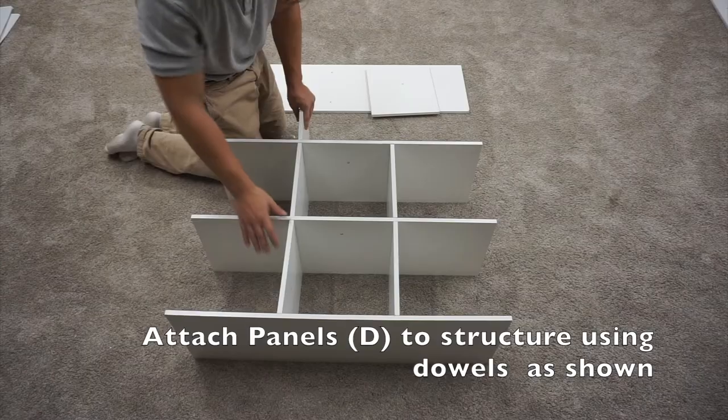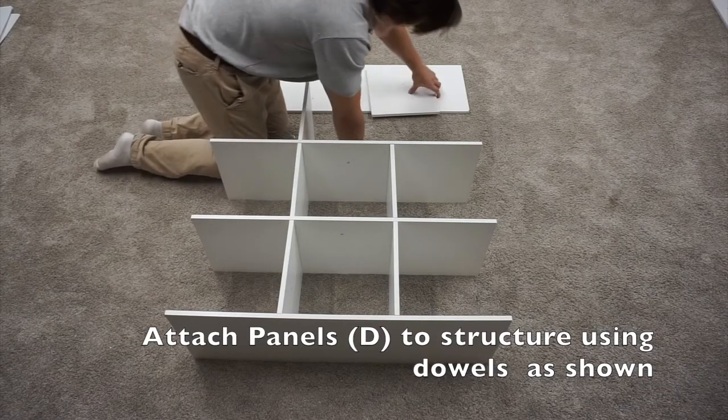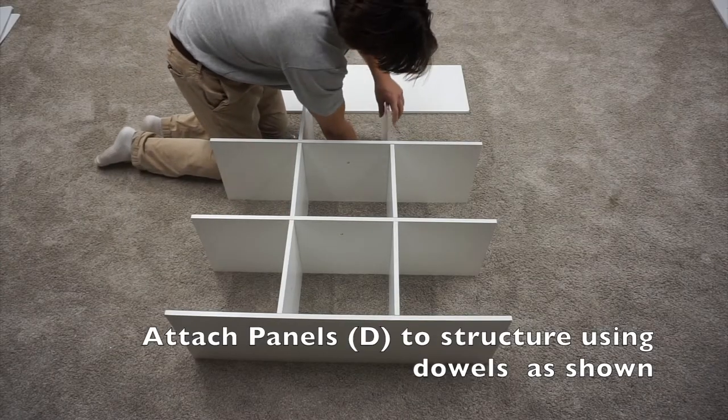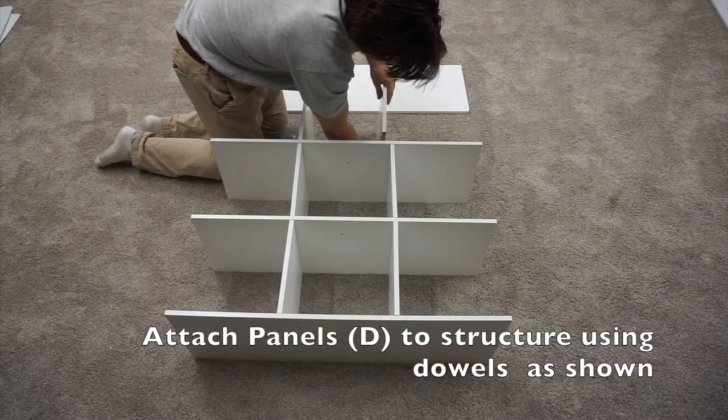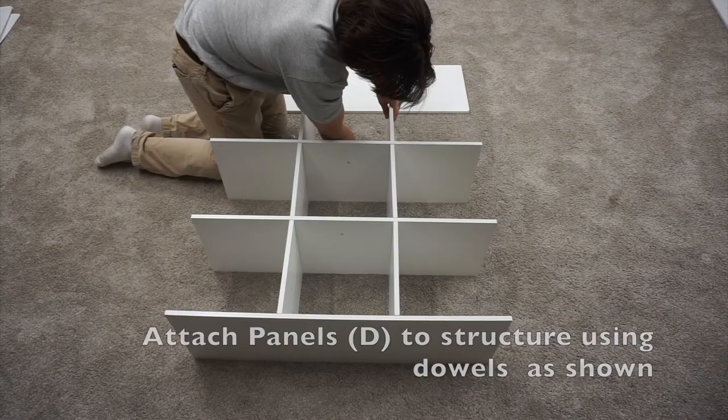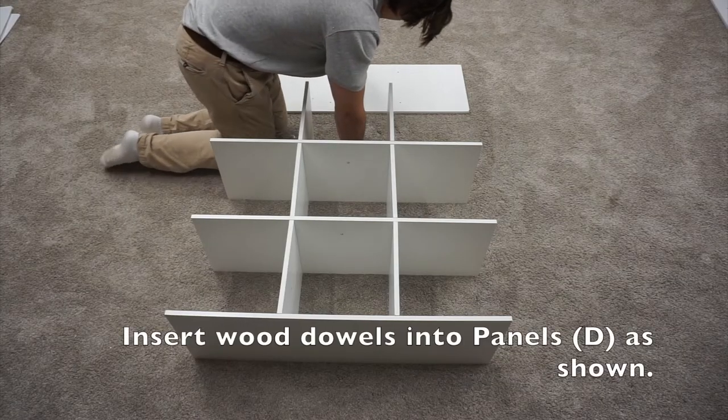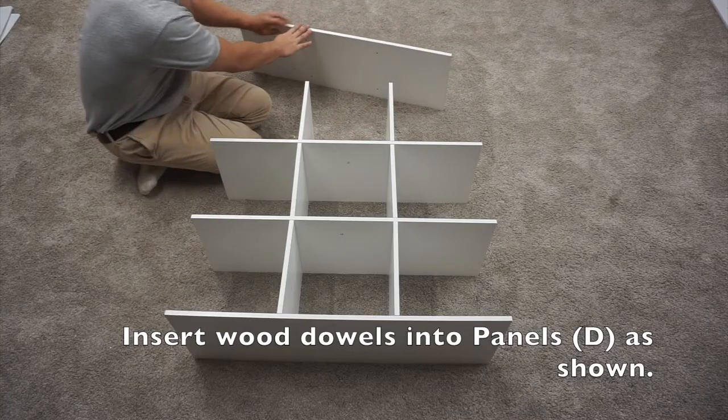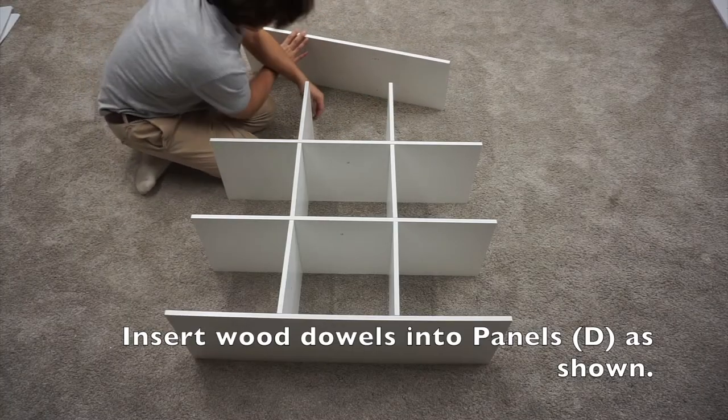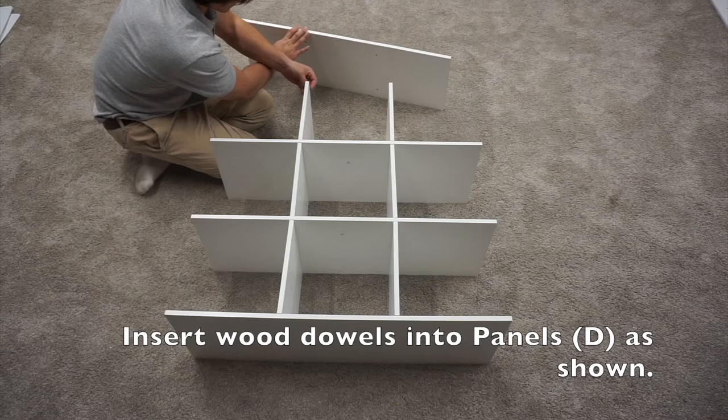And lastly, insert your four wood dowels into the Ds and attach the top A panel.